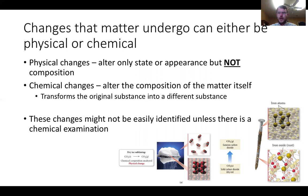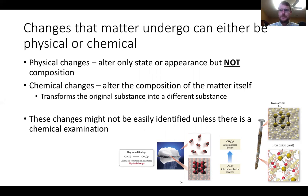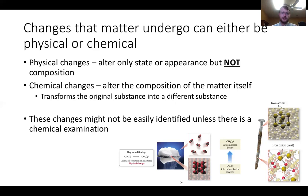Let's look at examples: burning lamp oil, bleaching hair with hydrogen peroxide, and melting ice cream. Burning lamp oil is a chemical change — we're creating something new by burning. Bleaching hair with hydrogen peroxide is a chemical change because you're altering the composition of your hair. Melting ice cream is a physical change — you're going from solid to liquid but the ice cream itself stays the same.